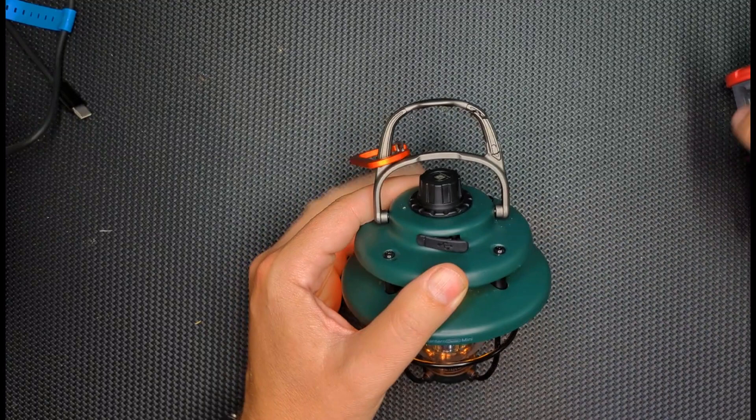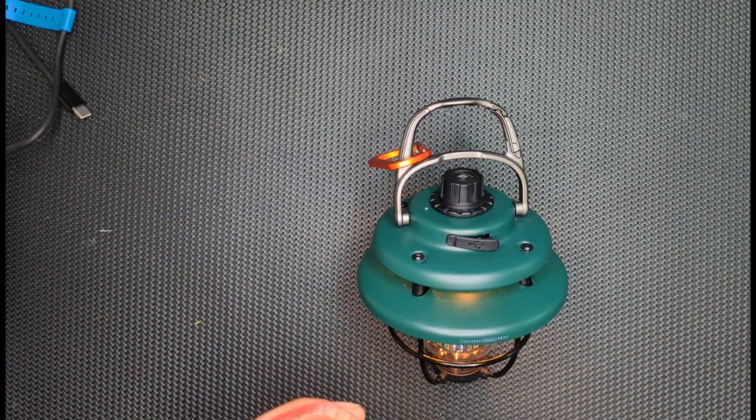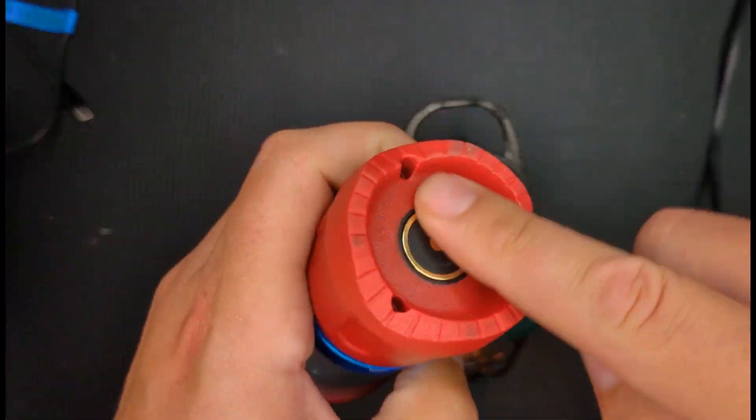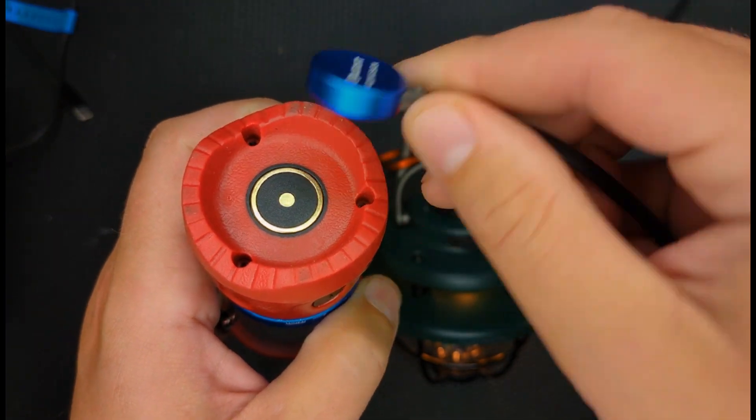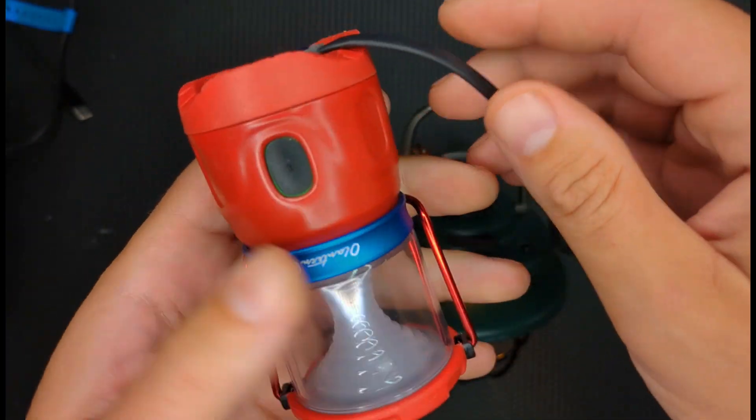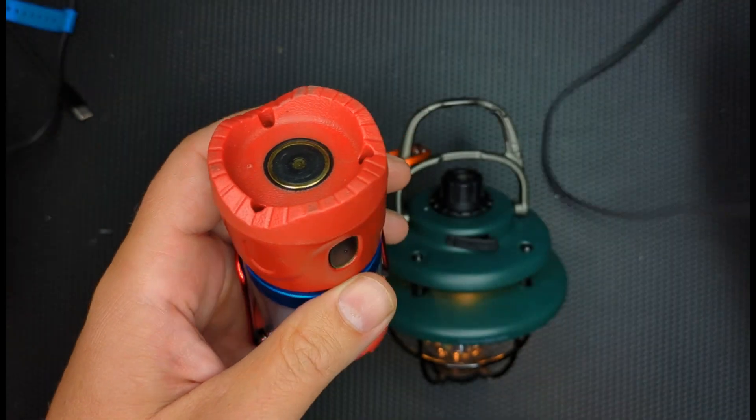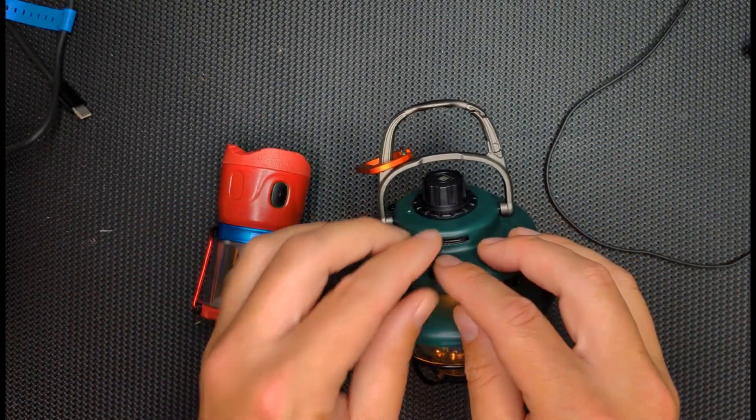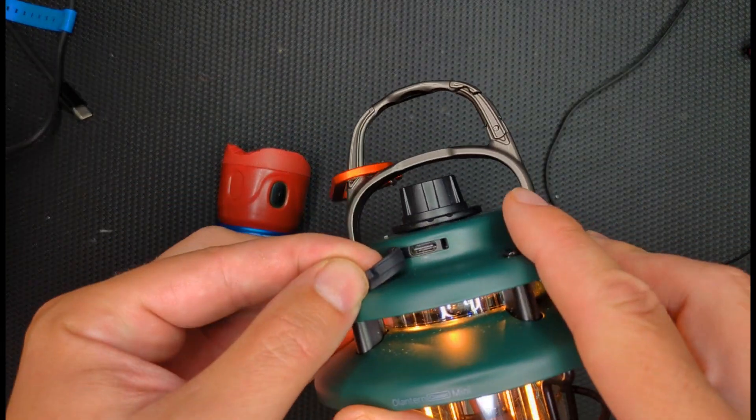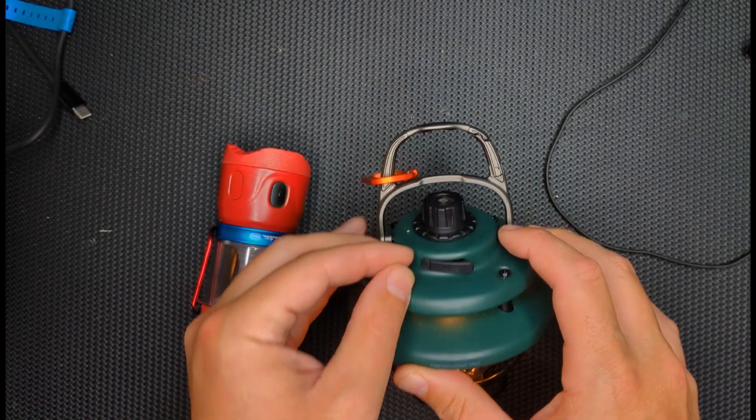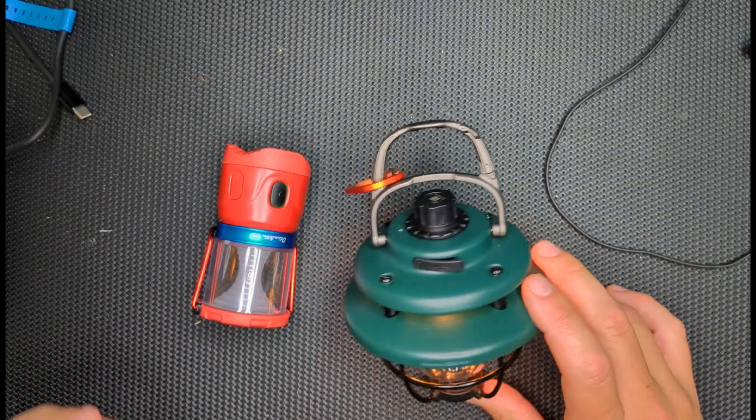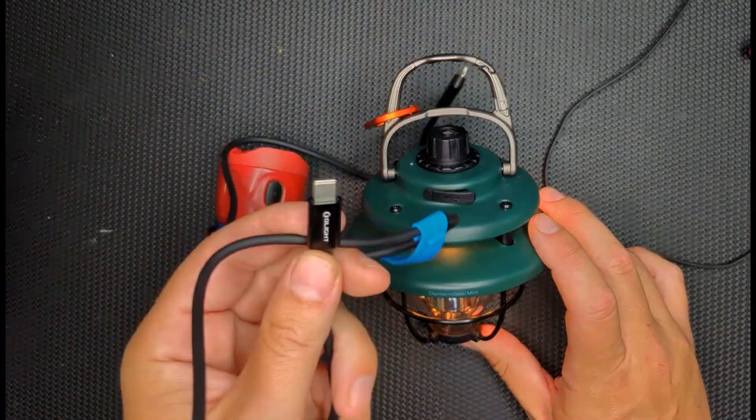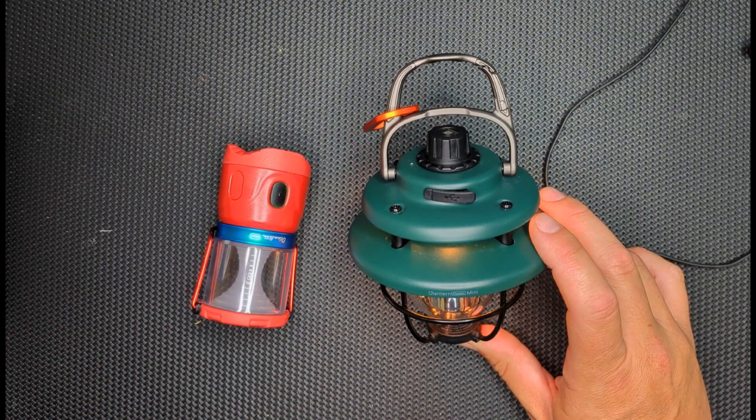Most O-Lights have this proprietary magnet at the bottom here that clips on here, and that just goes on there, and then that's how you charge it. This actually uses a USB-C. It has one USB-C port, and it has a 4500 milliamp battery, and it comes with a USB to USB cord.